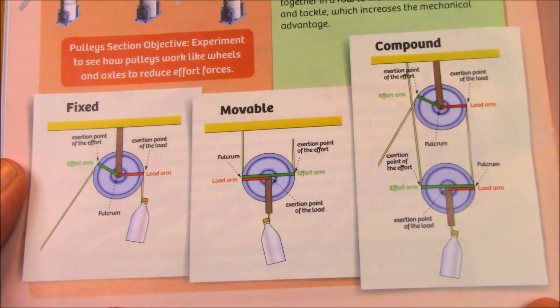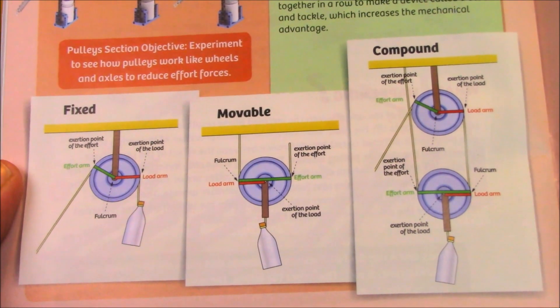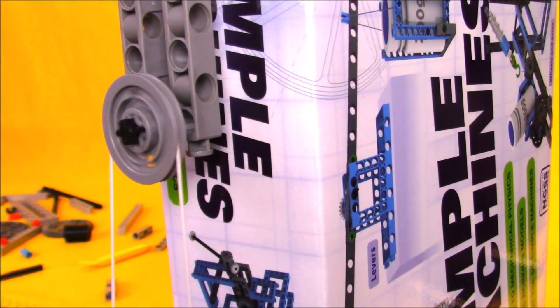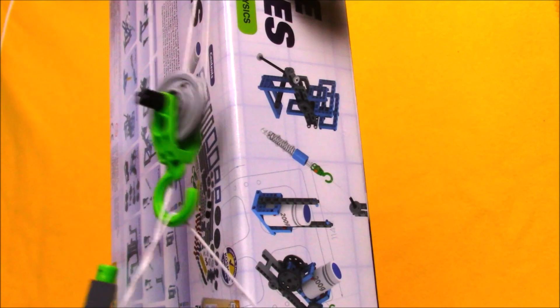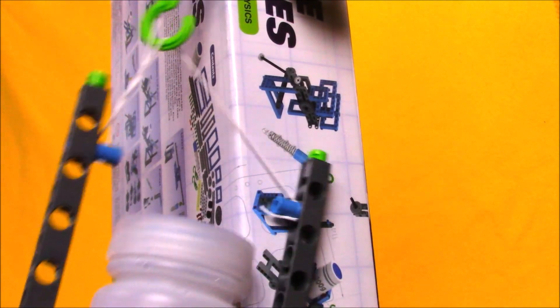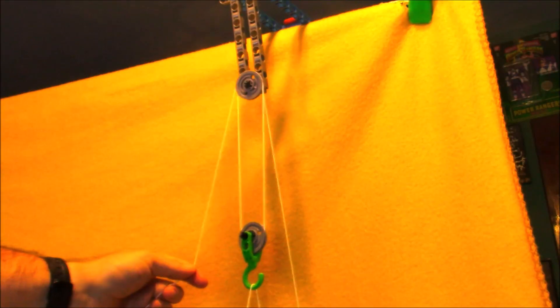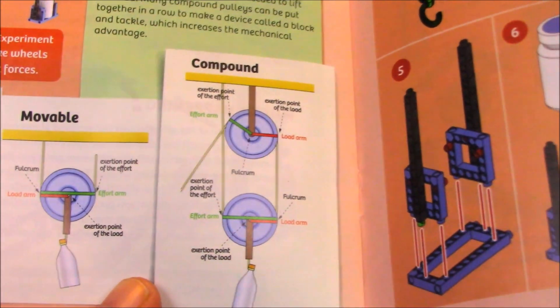In the case of the pulley, you build one basic setup, but there are some variations. Time to operate a fixed pulley. Here's the movable pulley in action. I assembled the compound pulley, and it was pretty neat, but I had a hard time filming it. This one would definitely be easier with a friend's help.